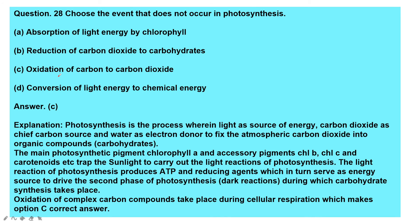Question: Choose the event that does not occur in photosynthesis. Options: absorption of light energy by chlorophyll; reduction of CO2 to carbohydrates; oxidation of carbon to carbon dioxide; conversion of light energy to chemical energy. The answer is oxidation of carbon to carbon dioxide, because that process occurs during cellular respiration, not photosynthesis.